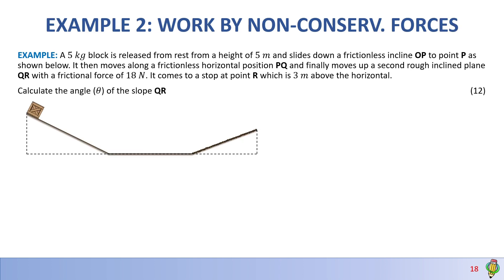Here is the second example, which involves work done by non-conservative forces and the conservation of energy. A 5 kg block is released from rest from a height of 5 meters and slides down a frictionless incline to point P. It then moves along a frictionless horizontal section P to Q, and finally moves up a second rough inclined plane Q to R with a frictional force of 80 newtons, coming to a stop at point R which is 3 meters above the horizontal. Calculate the angle theta of slope QR. We will divide the motion into 3 parts: OP, PQ, and QR, and use suitable formulas for each.